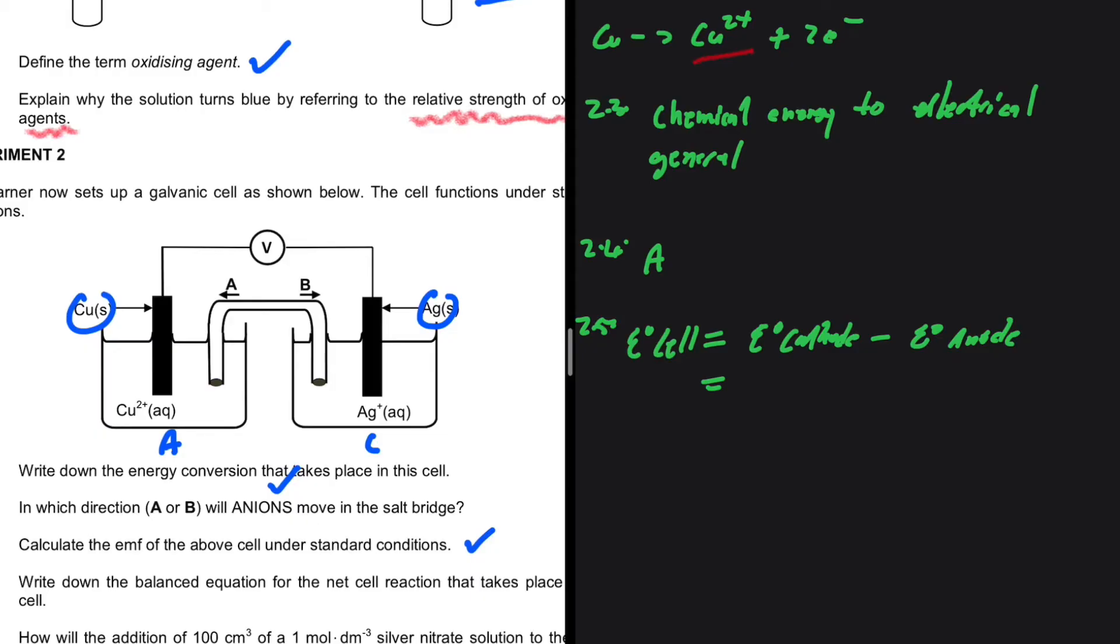What is the reduction potential? 0.80 V minus the reduction potential of Cu²⁺. You have to make sure you're picking the right one because there are a few coppers on your table of standard reduction potentials. It is 0.34 V. If you compute this, you shall get 0.46 volts as the initial EMF of the cell above.